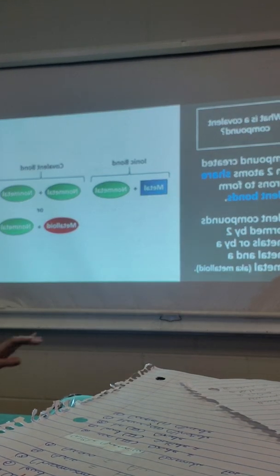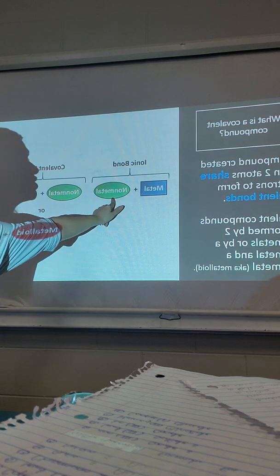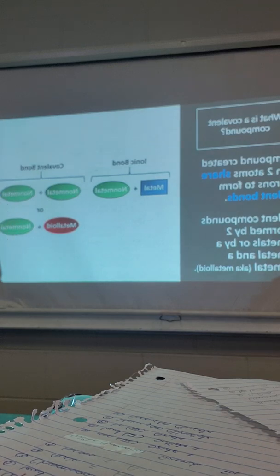So a covalent compound is going to be created when you have a non-metal and a non-metal coming together, whereas an ionic compound is a metal and a non-metal. The big thing here is that ionic compounds completely transfer electrons.